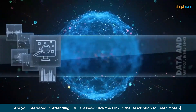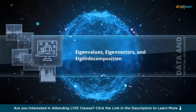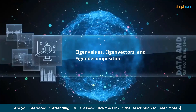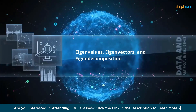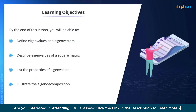Learning objectives: Eigenvalues, Eigenvectors, and Eigen Decomposition. In this session, we're going to define eigenvalues and eigenvectors, describe eigenvalues of a square matrix, list the properties of eigenvalues, and illustrate eigen decomposition.